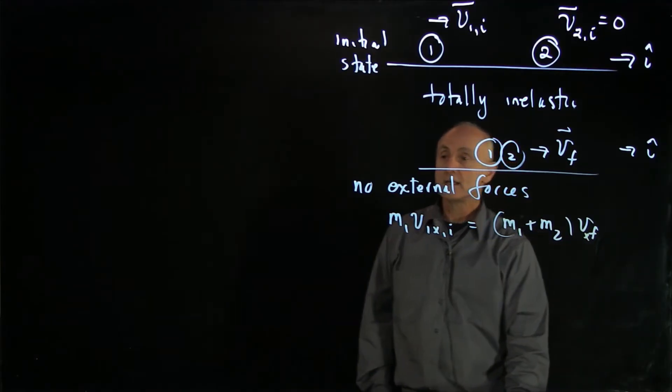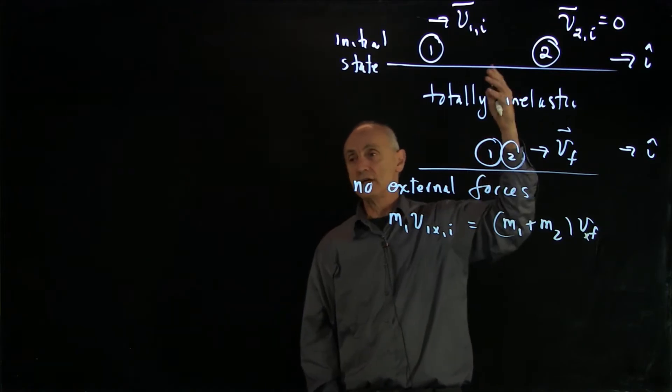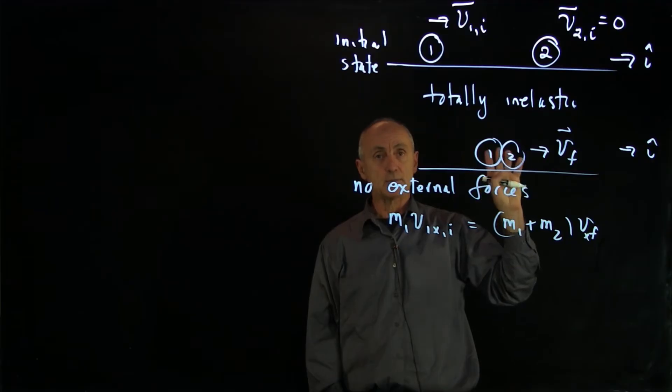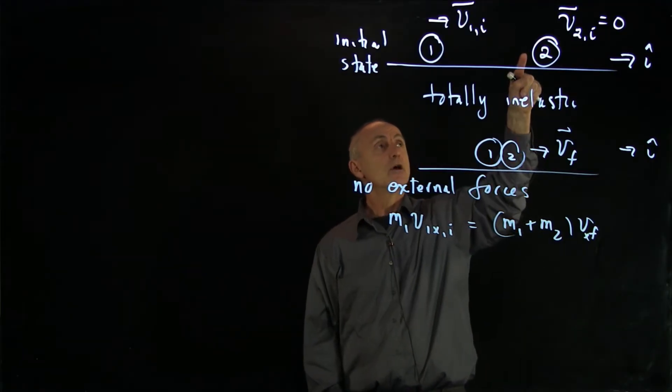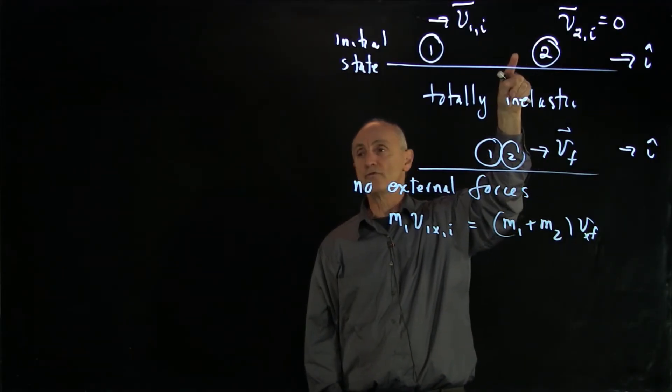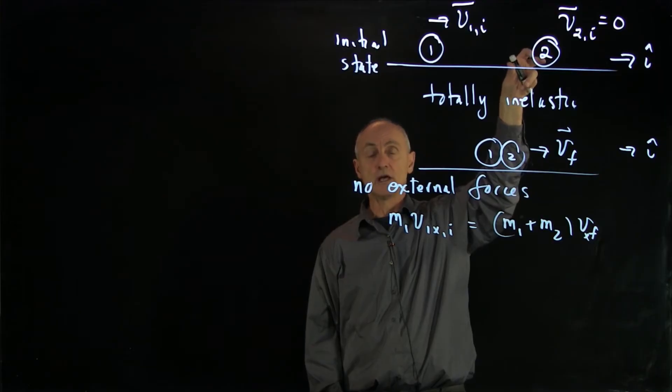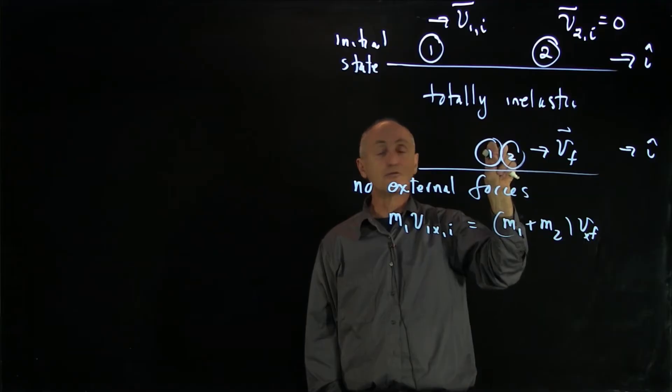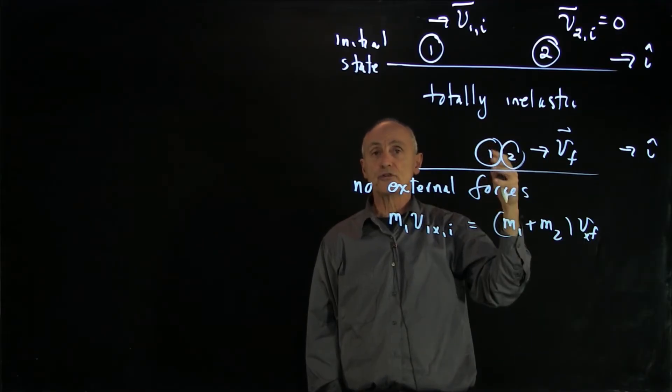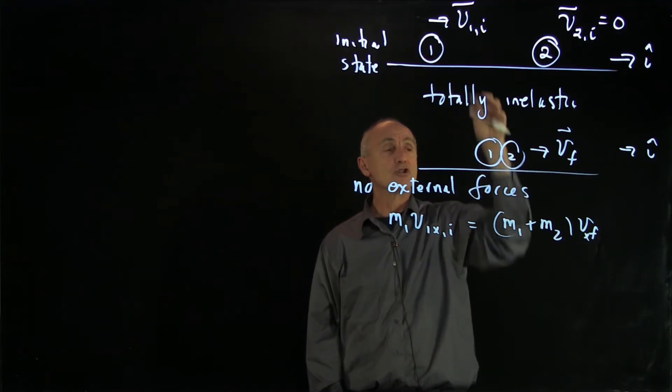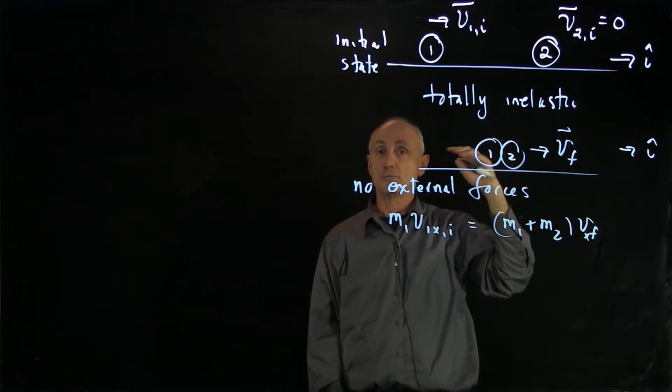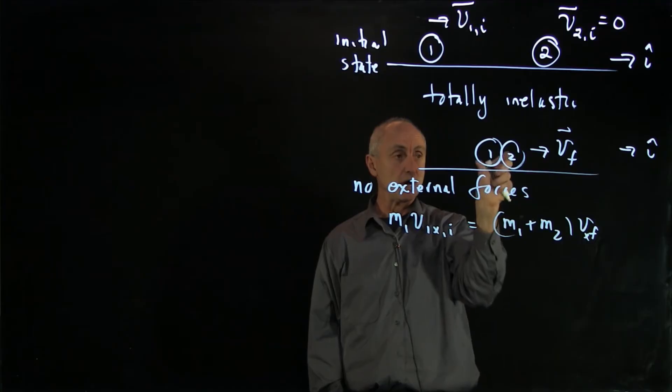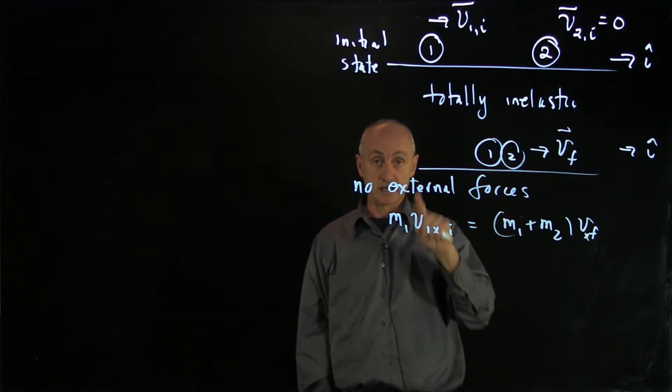And now, is energy constant? Well, in a totally inelastic collision, energy cannot be constant. And the reason is that these internal forces will cause deformations that are irreversible. So the objects might be deformed, which is a loss of some of that kinetic energy will go into deformation. There could be noise. There could be heat generated in the collision. When objects stick together, kinetic energy is not constant.